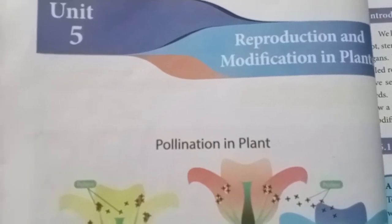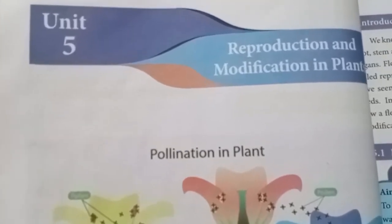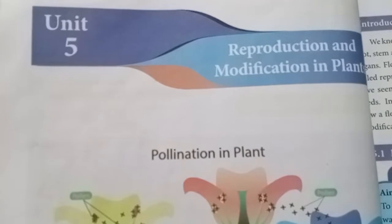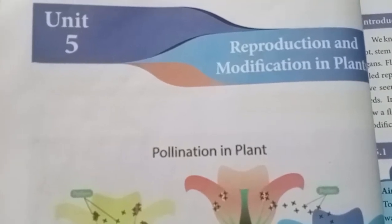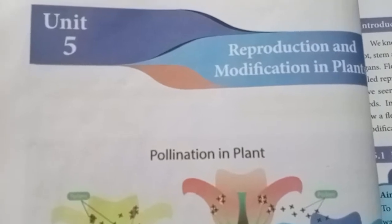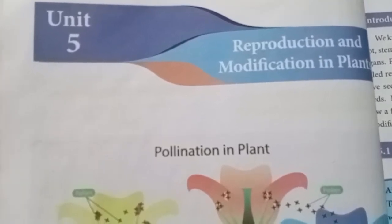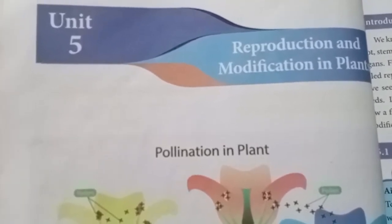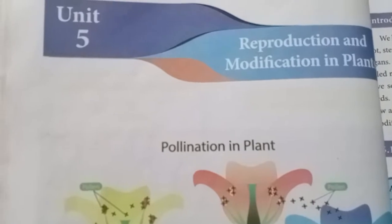If reproduction is not involving the flower or flower parts, then it is said to be asexual reproduction. Asexual reproduction is achieved by stem or leaves, other than the flower or seeds.